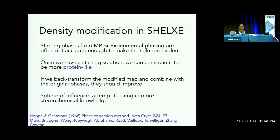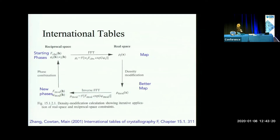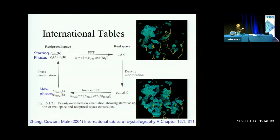In more recent times, there's statistical density modification from Tom Terwilliger and also from Kevin Coutan. Borrowing from the international tables, what we have is starting phases from molecular replacement or experimental phasing — wherever you have them — and you can calculate a map and make it look like a better map. That would be what your starting map looks like from just one helix; you see a very clear map around the helix and some features in the rest of the map, which you can improve by density modification.